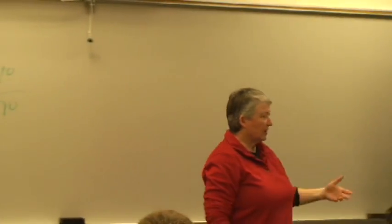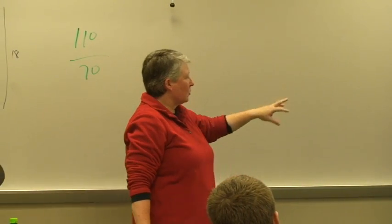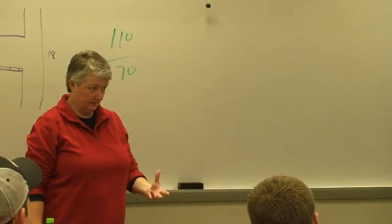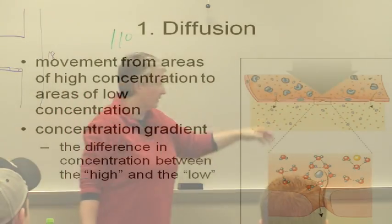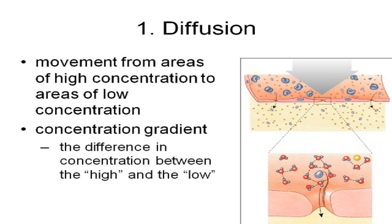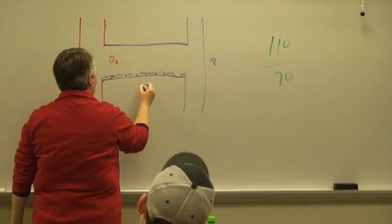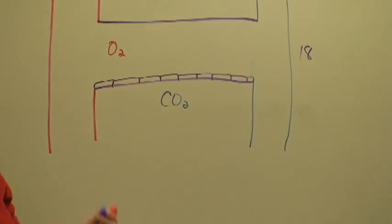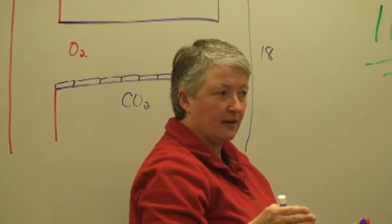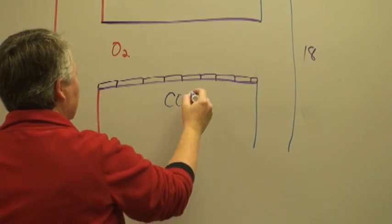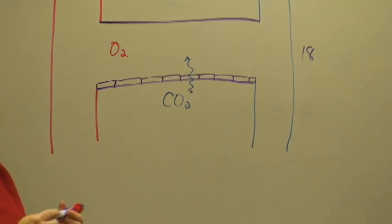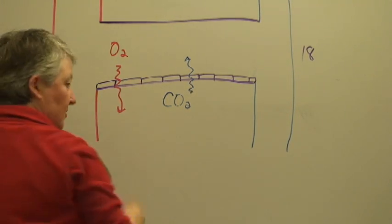We have diffusion, and you also have something called filtration and reabsorption. We'll see filtration and reabsorption again when we get to the urinary system. The concentration gradient is the difference in concentration of a substance between one area and another. In the capillaries, you're going to have more oxygen on the inside and more carbon dioxide on the outside. Oxygen and carbon dioxide are lipid soluble — they can squeeze right through the phospholipid bilayers of the cell membranes, so they have no problem diffusing.